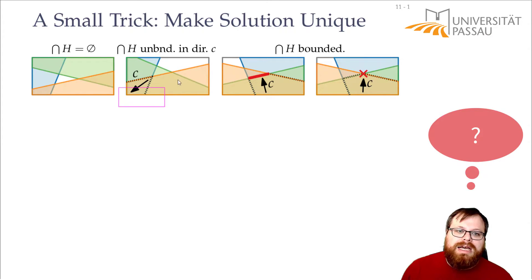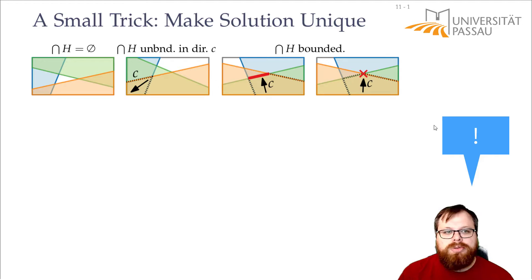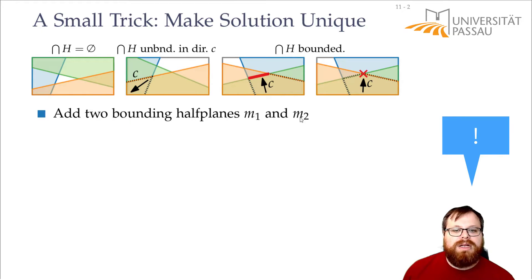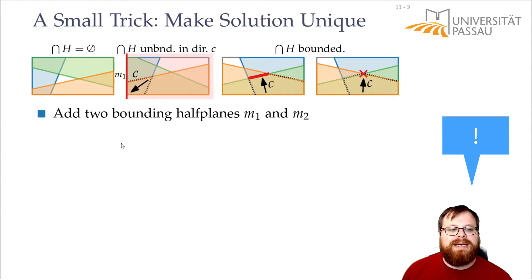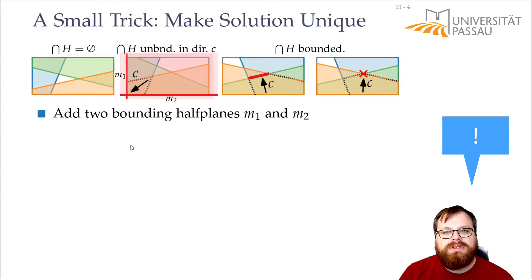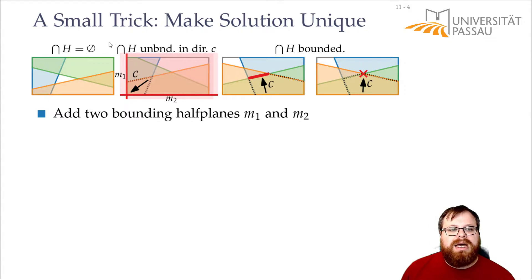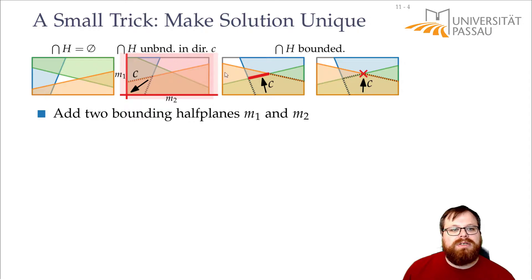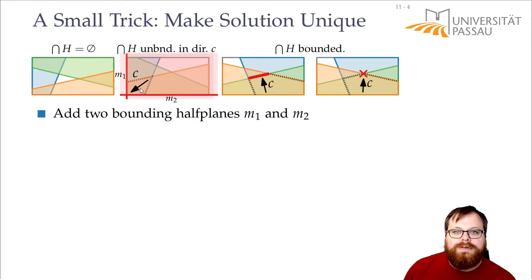So how can we make our life easier? What we want to do is add two more half planes to our input. We call them M1 and M2. Assuming our vector C goes to the bottom left, we want a half plane that bounds the whole instance from the left and one that bounds it from the bottom. If C goes in some different direction, we just rotate the whole thing. If we start with these two half planes, our solution will return exactly this corner point, so we know it was unbounded — and we don't have to treat this case anymore. Whatever we get will always be bounded.